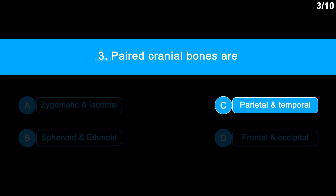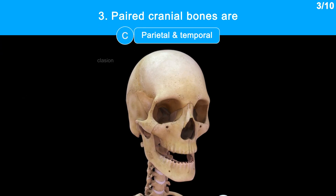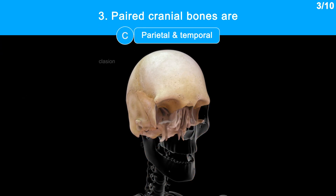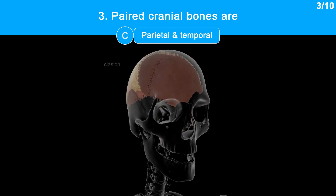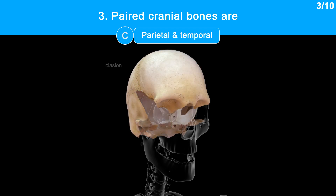The correct answer is Option C: Parietal and temporal. Our skull consists of 8 cranial bones: frontal, parietals, temporals, occipital, sphenoid, and ethmoid. Out of these, parietals and temporals are paired and the remaining are unpaired.